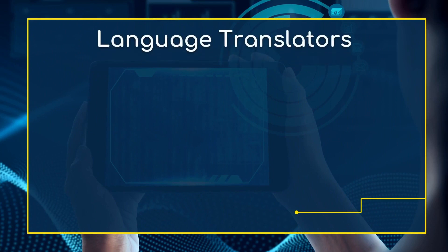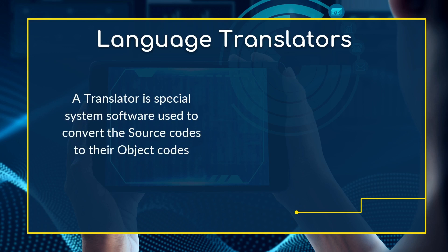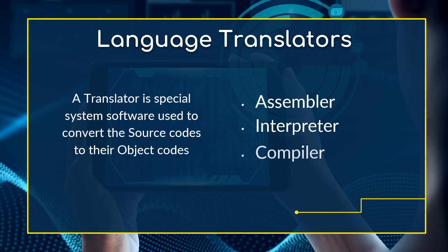This brings us to another very important term: language translator. Because the programmer works with source code and the computer requires object code, there must be a translator. A translator is a special system software used to convert source codes to object codes. There are many examples, but I'll talk about the three most commonly used translators: the assembler, the interpreter, and the compiler.